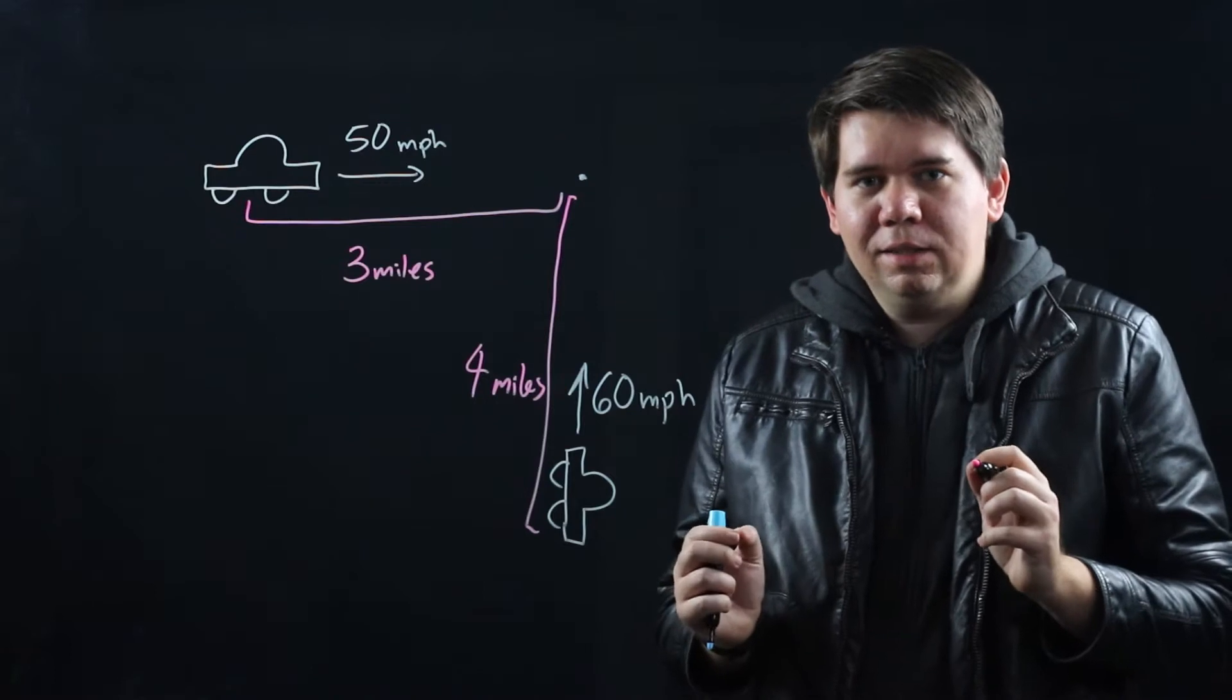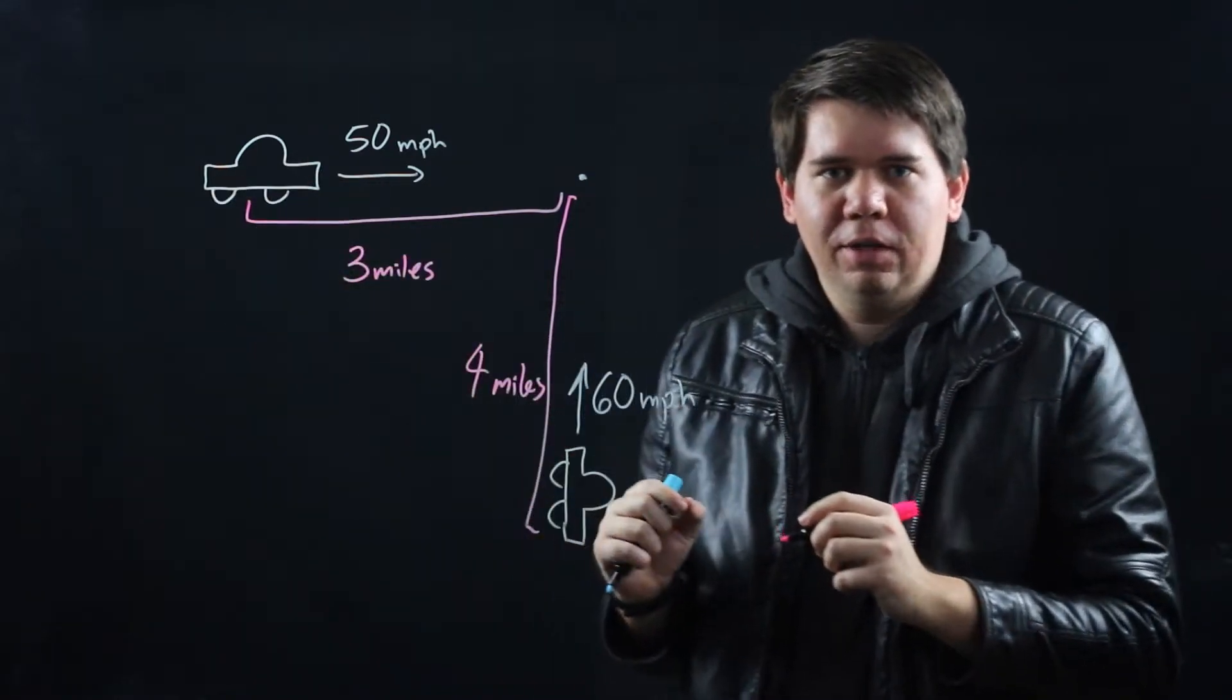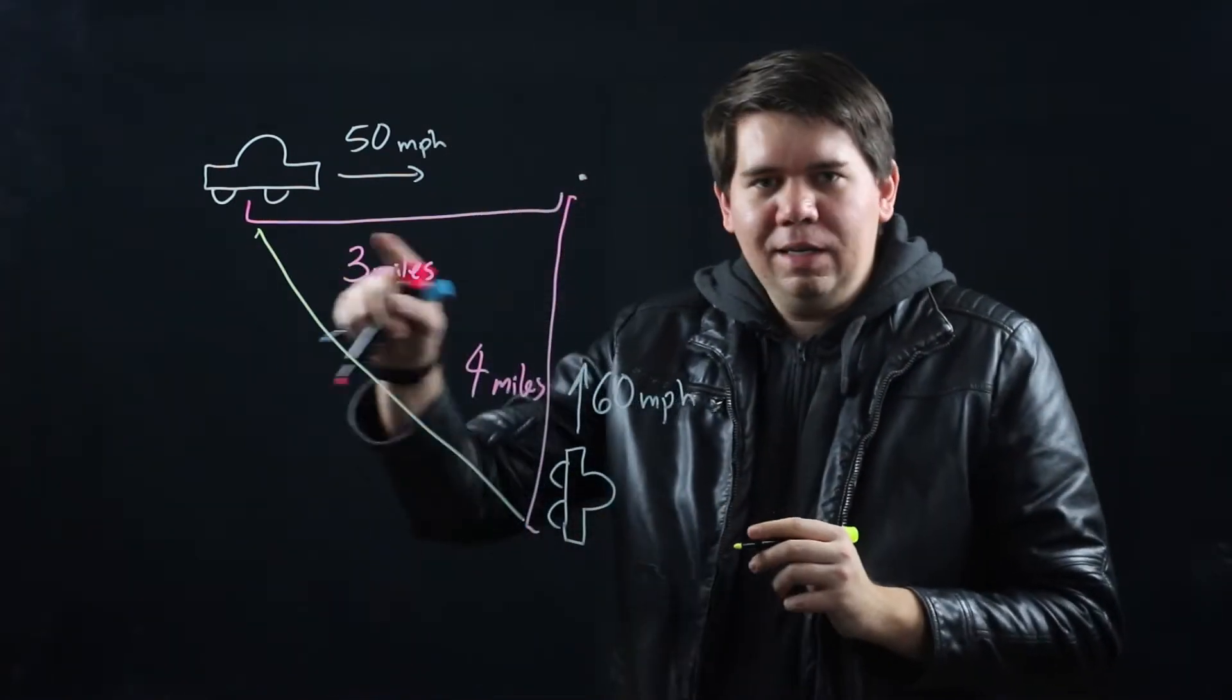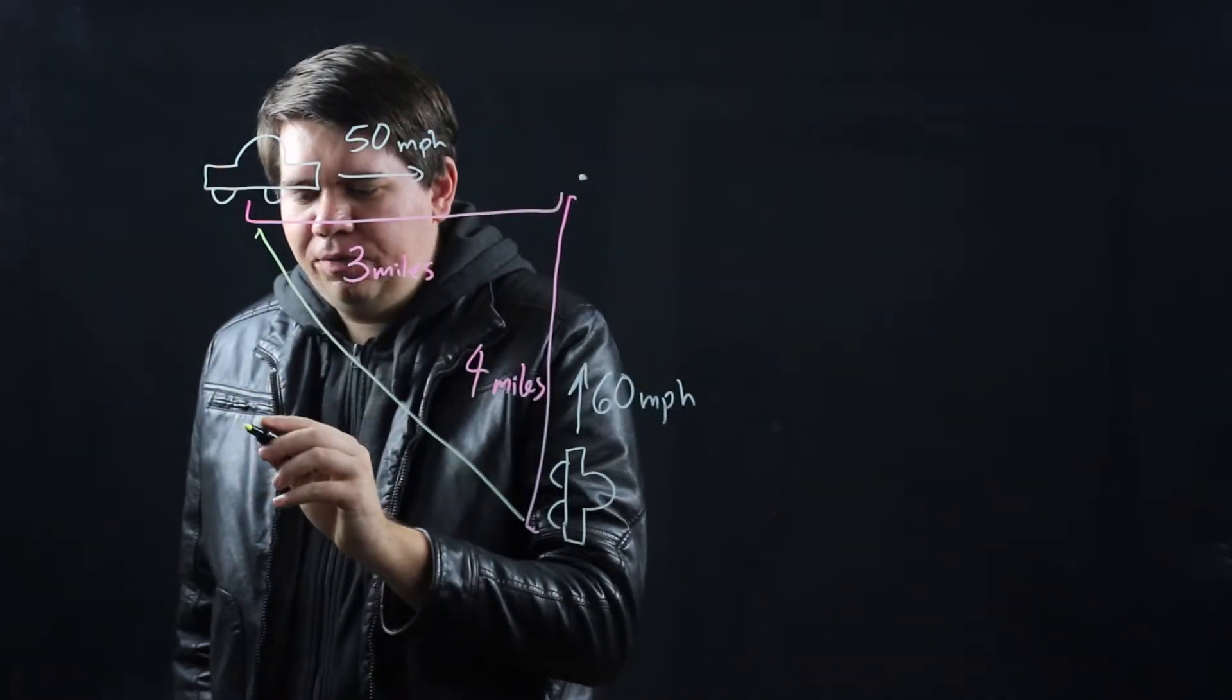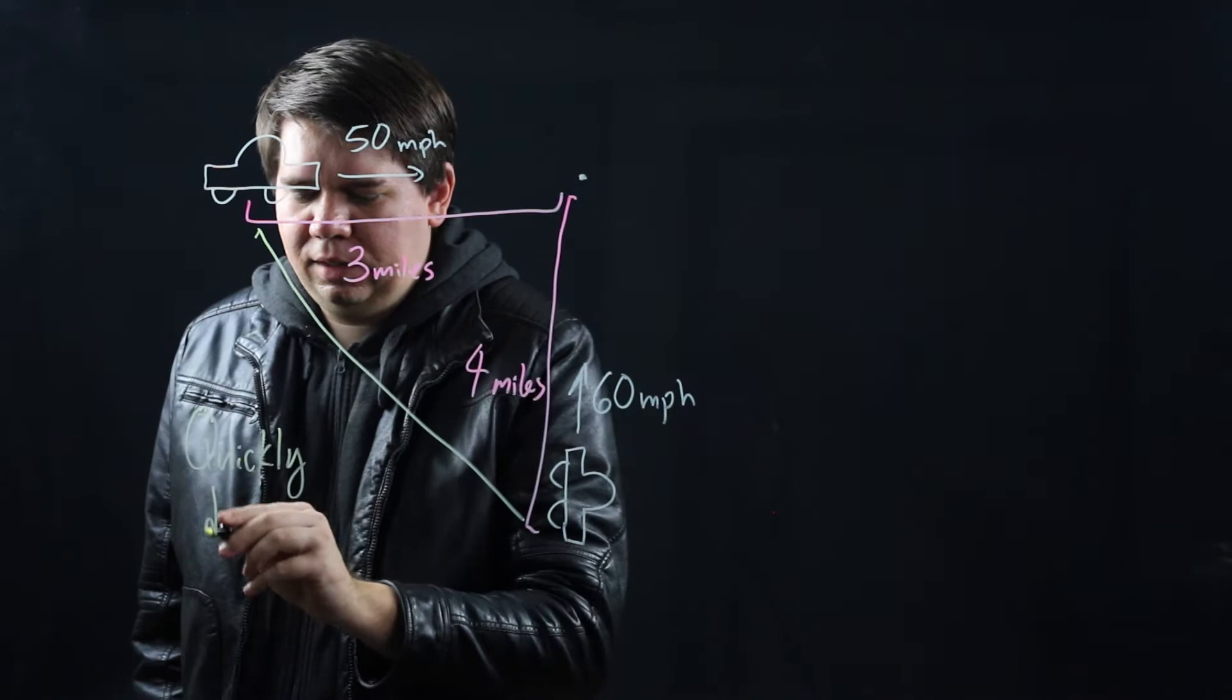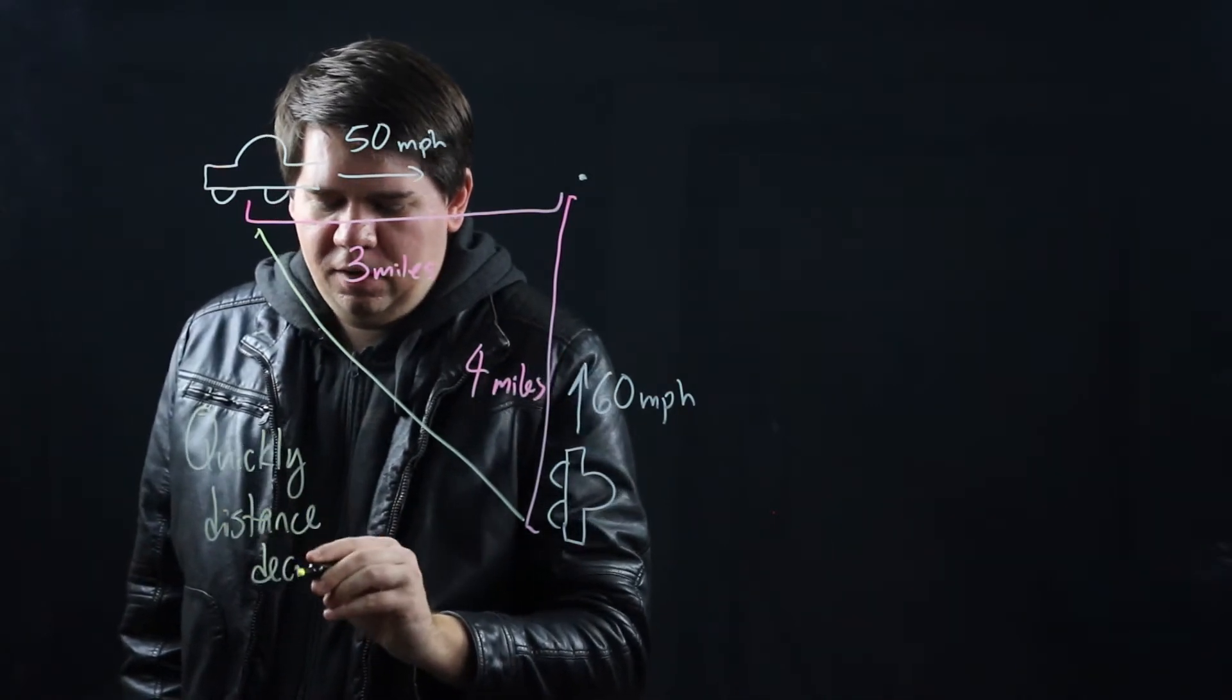your friend finds themselves at four miles away. The question is, how quickly are you approaching each other? Or said another way, if you think about the distance between you and your friend, how quickly is that distance decreasing? So we're trying to figure out the rate of change of this distance, of how quickly this distance is decreasing.